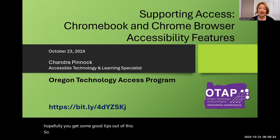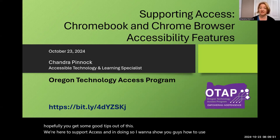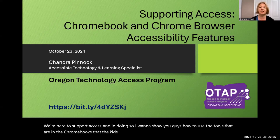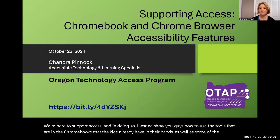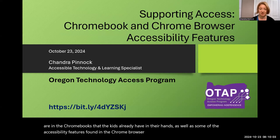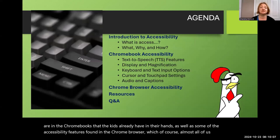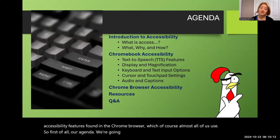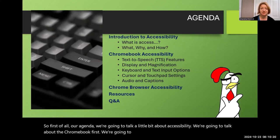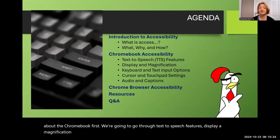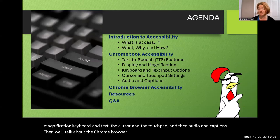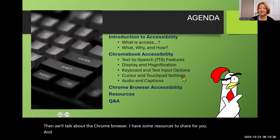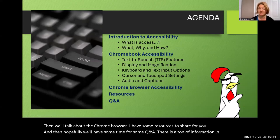We're here to support access, and I want to show you how to use the tools built into Chromebooks that kids already have in their hands, as well as accessibility features found in the Chrome browser. Our agenda: we'll talk about accessibility, then Chromebook features — text-to-speech, display and magnification, keyboard and text, cursor and touchpad, and audio and captions. Then Chrome browser, resources, and Q&A. There's a ton of information, so let's dive right in.